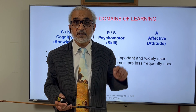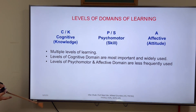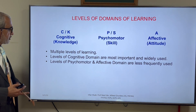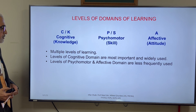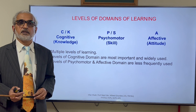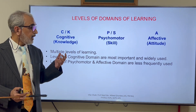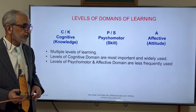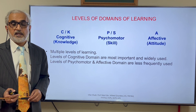So these are the different levels — multiple levels of learning. The levels of the cognitive domain are most important and widely used. Levels of psychomotor and affective domains are less frequently used. Therefore, when talking about curriculum, teaching, and learning, the levels which are widely used and discussed are of the cognitive domain, while levels of psychomotor and affective domains are comparatively less used.